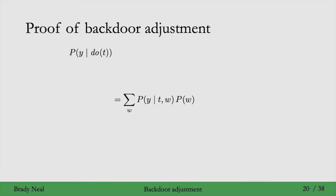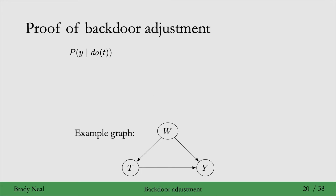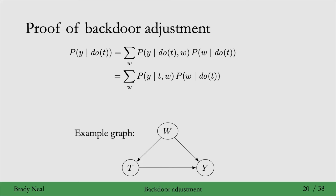How do we prove this? We want to start with p of y given do(t), and then, through a series of steps, transform that into the statistical estimate on the bottom. To aid intuition for this proof, we'll display a graph — it's not necessary that this is the actual causal graph, but it will be helpful for intuition. The first step is to get w in there by conditioning on w and summing over it. Then, because w blocks all backdoor paths from t to y, the only association flowing from t to y is causal association, so we can remove the do(t) in the factor for y.